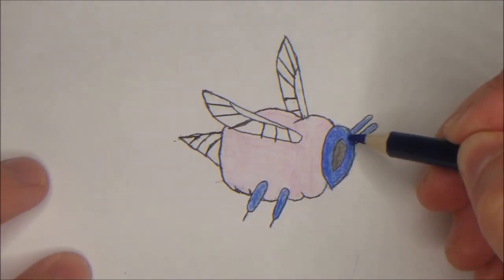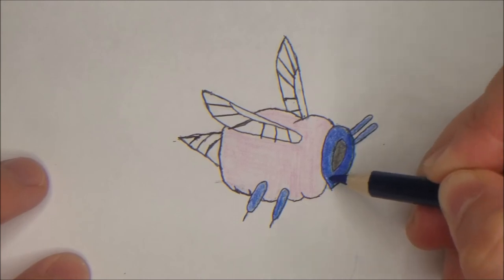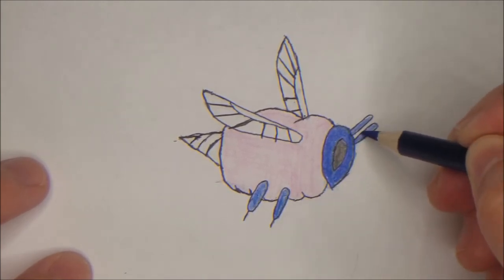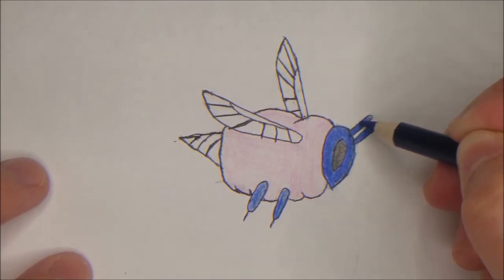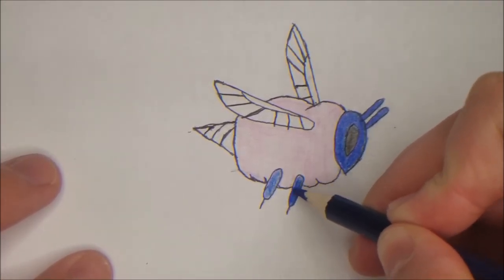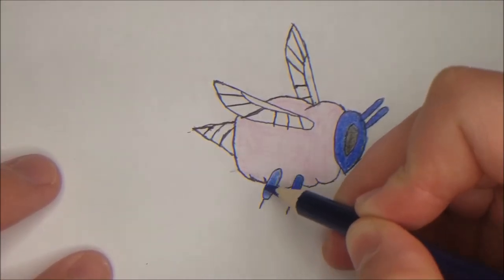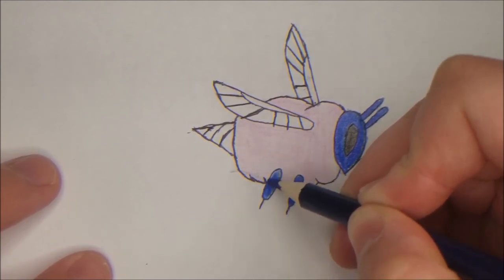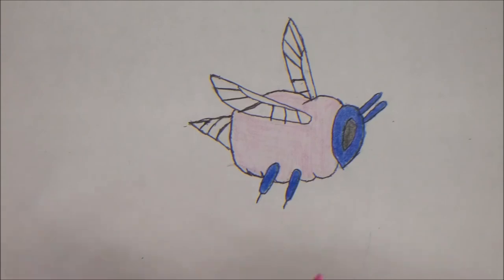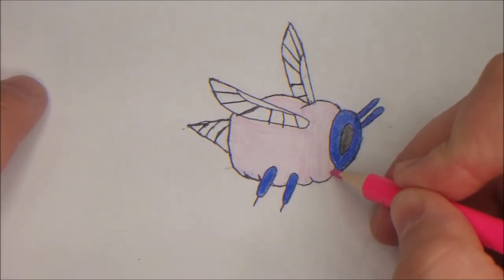It is kind of hard to color and do it looking through the lens, so if I do make mistakes, bear with me, I'm looking through a camera that is on top of a huge lens, so it's kind of hard. There we go. I'm going to go over my little blemish with some pink.